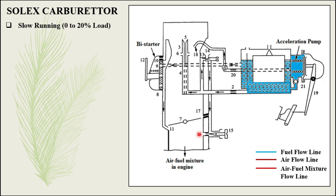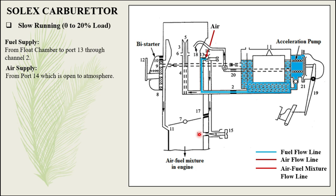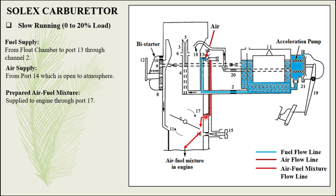During slow running, when the engine has a load between 0 to 20 percent of its capacity, it is called the slow running condition. Fuel and air supply remain the same — fuel through channel number 2 up to port number 13, and air from atmosphere to port number 14. During slow running the throttle is operated, creating an opening which causes the suction pressure to drop. The prepared mixture then tries to come out from port number 17, passes through the throttle valve, and goes towards the engine.